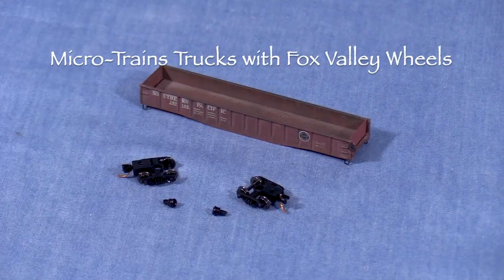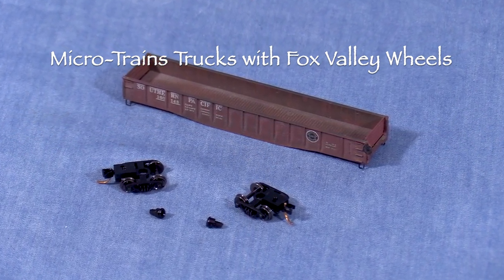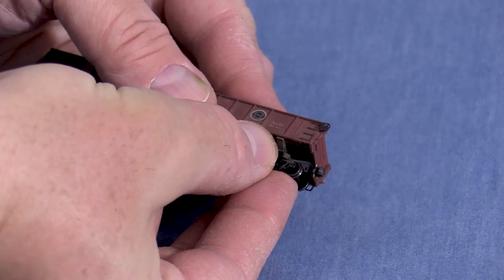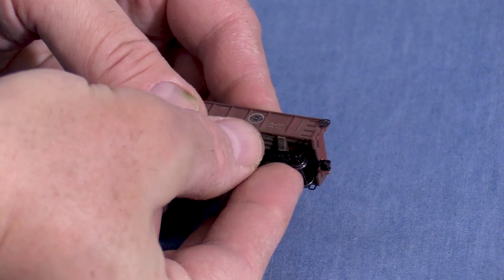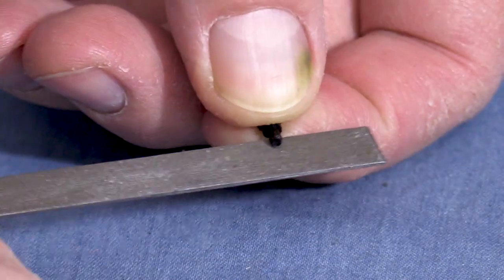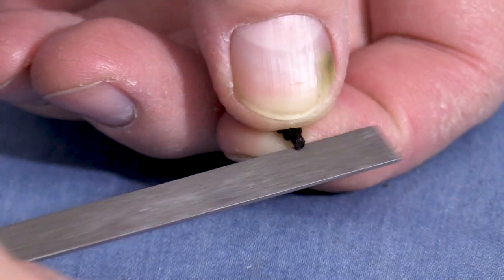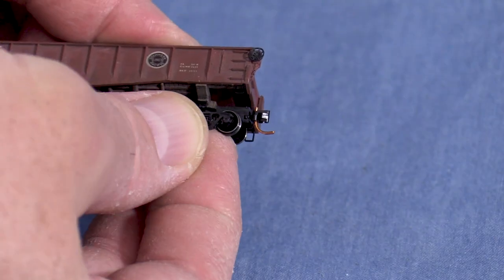The last step is to add some new Microtrains trucks. I've substituted Fox Valley metal wheels on these because I prefer those to plastic wheels. Even though this is a Microtrains car and I'm using Microtrains bolster pins, the pins are a little too tight to seat properly, leaving the trucks loose. I'm going to file a little material around the part of the pin that sticks into the frame. Now I can insert a pin into the truck and put the truck on the car.